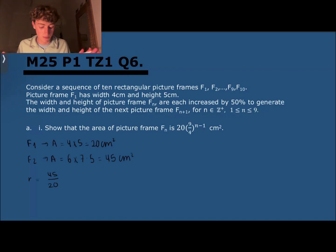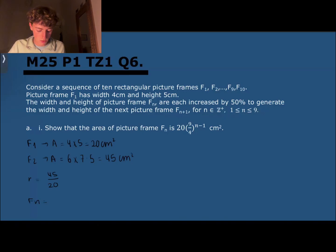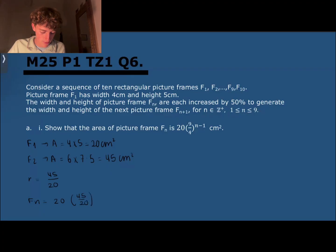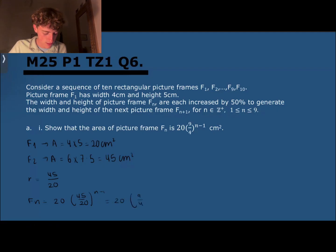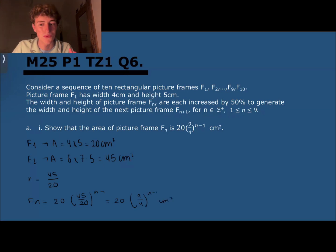Now we can use the formula for the geometric sequence to calculate f(n) for any picture frame. f(n) equals u1 times r to the power of n minus 1, which is 20 times (45/20) to the power of n minus 1. We then simplify 45 over 20 by dividing by 5, giving us 20 times (9/4) to the power of n minus 1 centimeters squared. That's the solution to part a1.